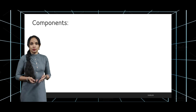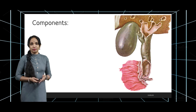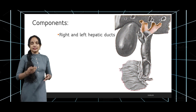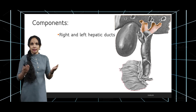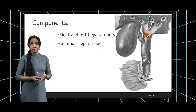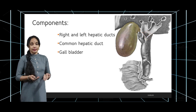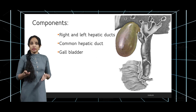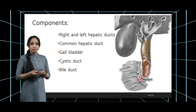Now let us see the components one by one. This is a beautiful diagram from Netter's showing the extrahepatic biliary apparatus. The first component is the right and the left hepatic ducts, which join together to form the common hepatic duct. After the common hepatic duct, we have a sac on its right side called the gallbladder, which attaches to the common hepatic duct via its own duct — the cystic duct.